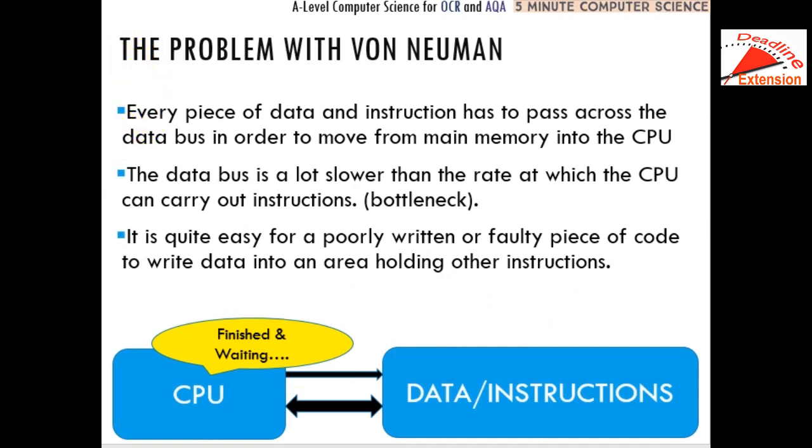The problem with Von Neumann is every piece of data and instruction has to pass across the buses. And the data bus, whilst it's very quick, is still not quick enough to service the CPU. And what that means is the CPU receives the data and then just sits there doing nothing because it's executed the data. It's now waiting for the data bus to fetch the next bit of data and it's sat there idle. And that causes a problem. So the CPU is finished doing its business. It's just waiting. When will I receive the next bit of data?